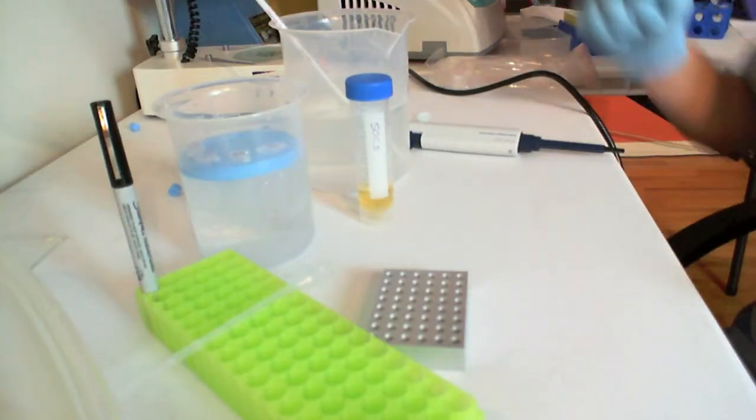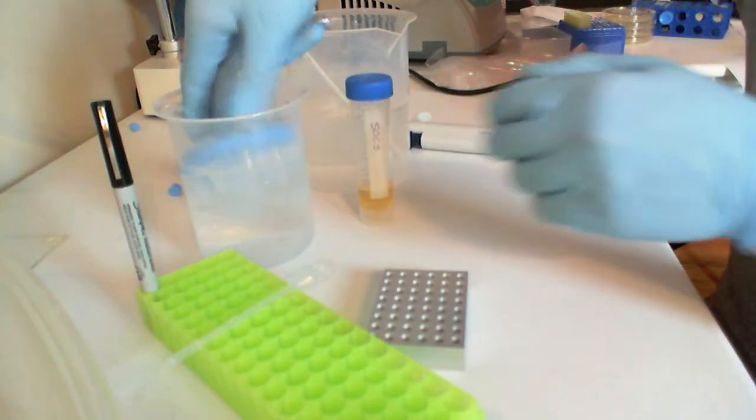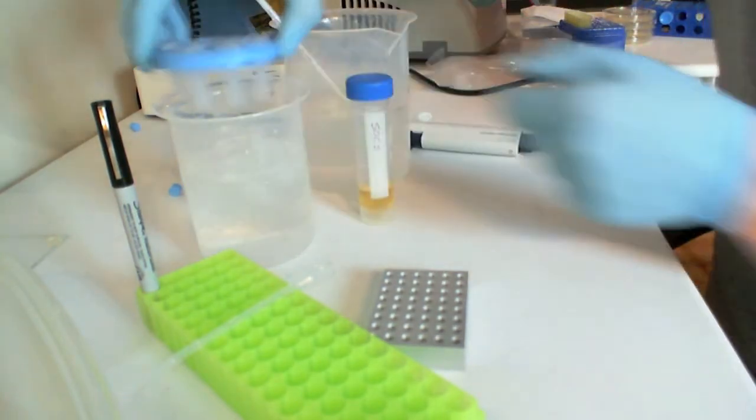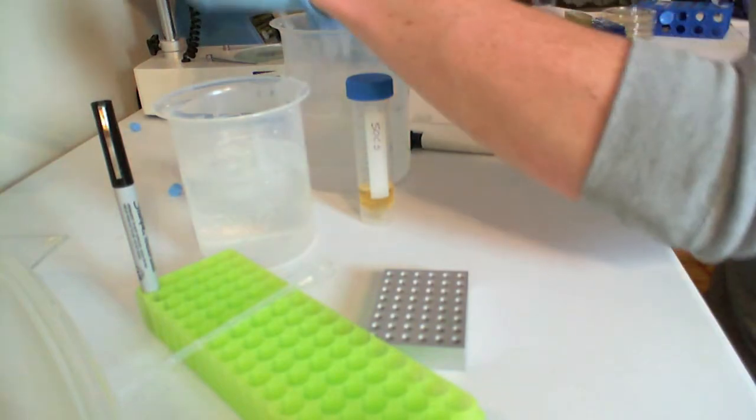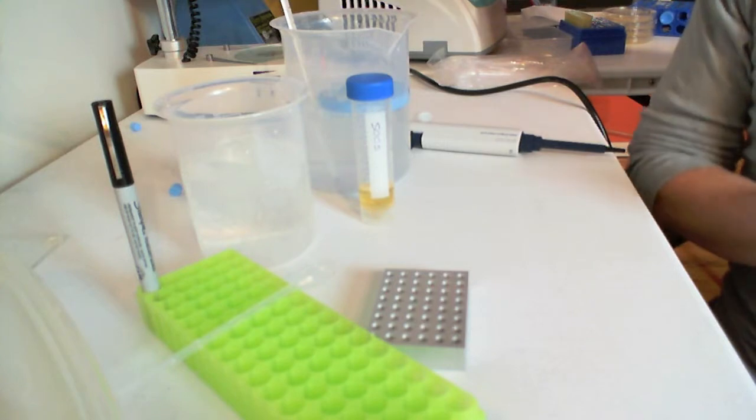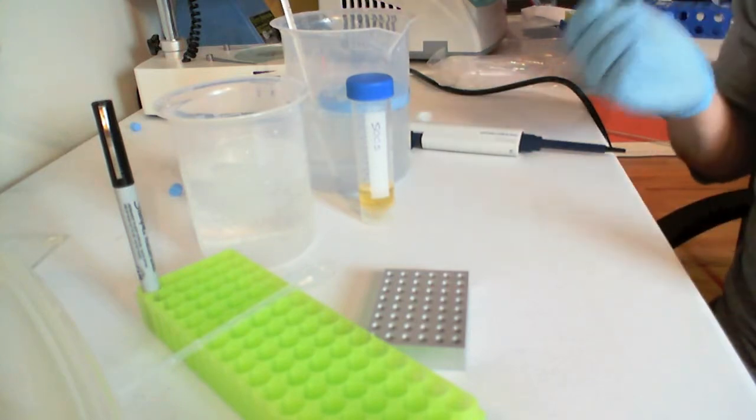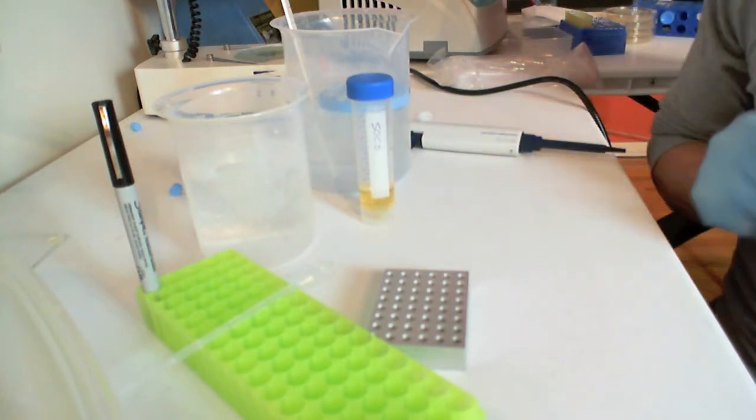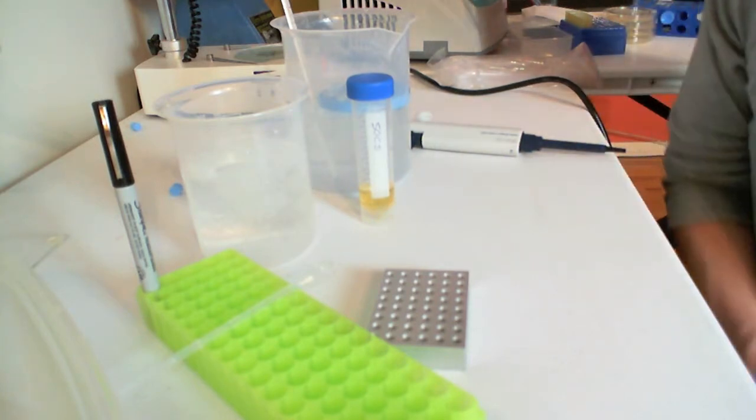Now that your bacteria have been sitting on ice for 20 minutes, you can remove them from ice and put them directly into a 42 degree water bath. We're going to be counting to 60. This is heat shocking the bacteria, getting them to take the plasmid DNA from outside of the bacterial cell wall, inside of the bacterial cell wall, so they can start using the DNA.